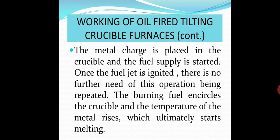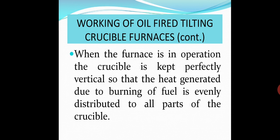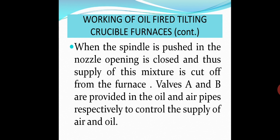Now, the metal charge is placed in the crucible, and the fuel supply is started. Once the fuel jet is ignited, there is no further need of this operation being repeated. The burning fuel encircles the crucible, and the temperature of the metal rises, which ultimately starts melting. When the furnace is in operation, the crucible is kept perfectly vertical, so that the heat generated due to burning of fuel is evenly distributed to all parts of the crucible. When the spindle is pushed in the nozzle, opening is closed, and thus supply of mixture of oil and air is cut off from the furnace.